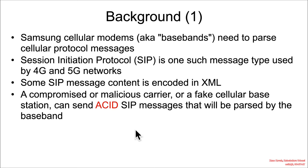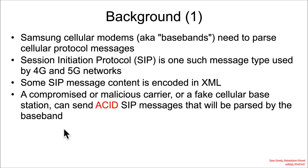In this scenario, an attacker would be someone either within a compromised cellular carrier, a malicious cellular carrier, or an attacker who happens to be in physical proximity to a victim and sets up a fake cellular base station. The victim phone will connect to the fake base station, allowing the attacker to send malicious SIP messages with XML content, which will be parsed by the baseband before any typical cellular authentication can occur.